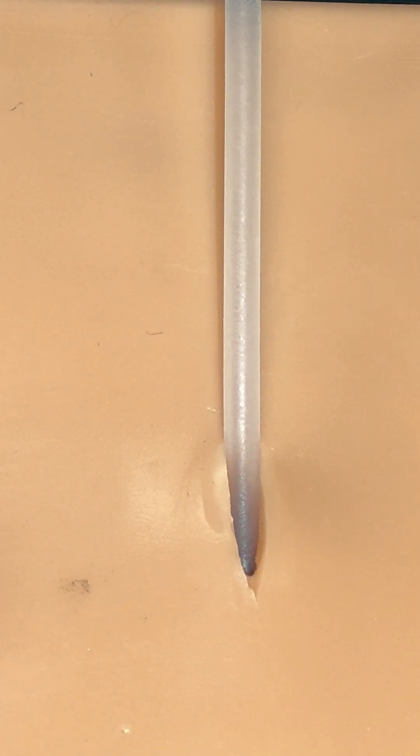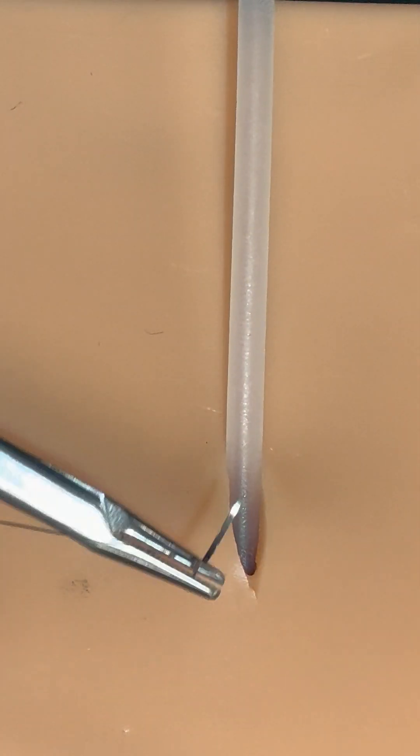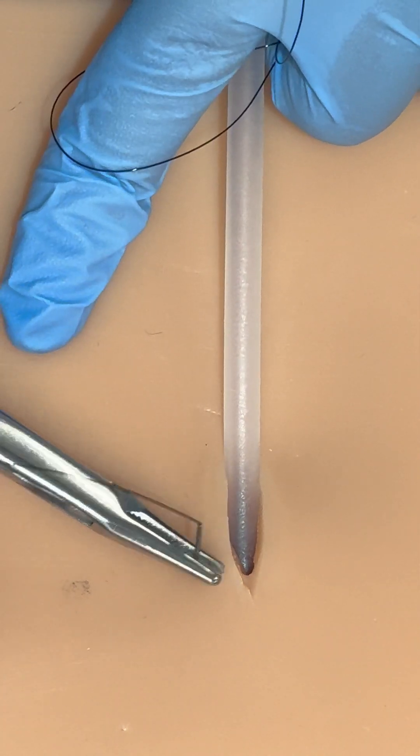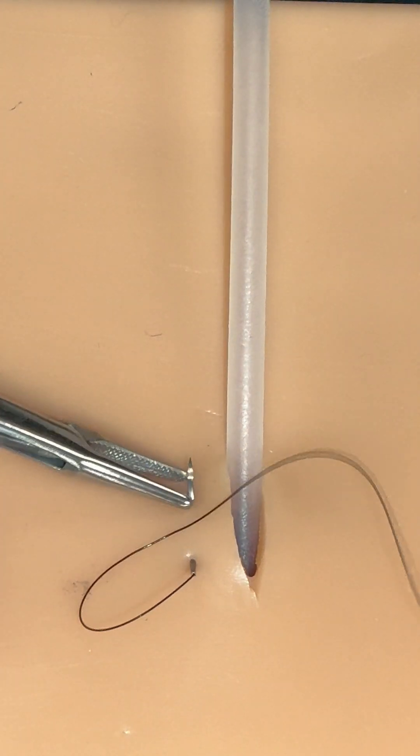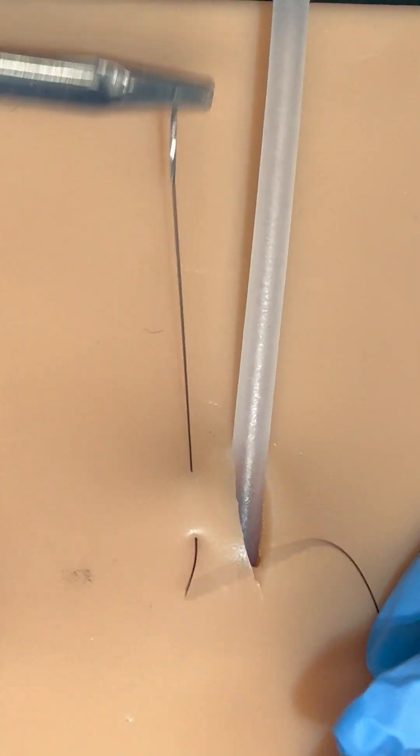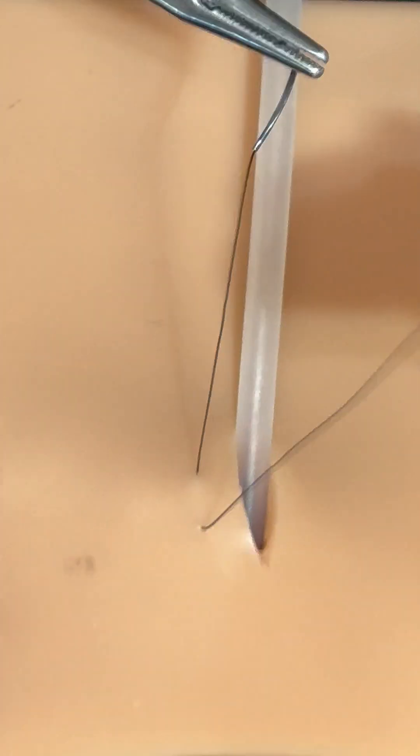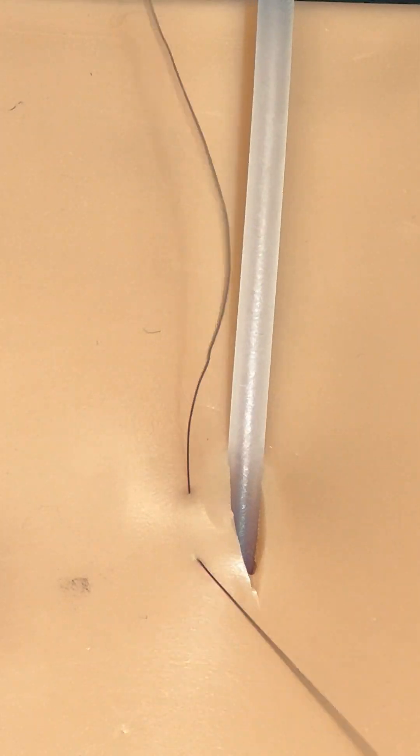So for the purse string suture, I'm going to take approximately three to four bites of equal size. I'm going to take a full thickness skin incision here. You don't want to only go partial thickness through the skin because if you do, this suture will be very easy to come out if the tube gets caught on something. I want it to be nice and secure. So there's my first throw.